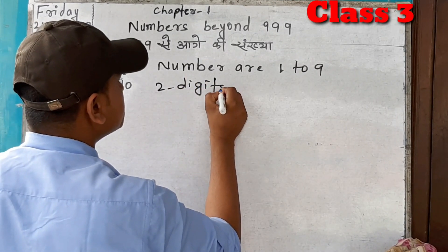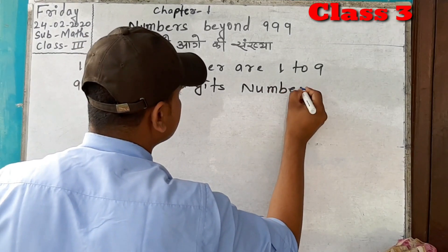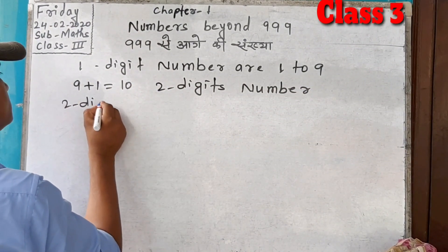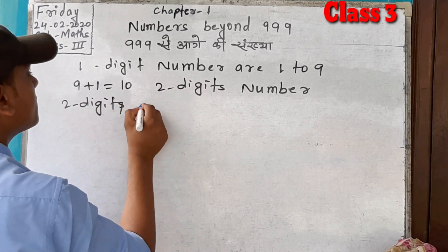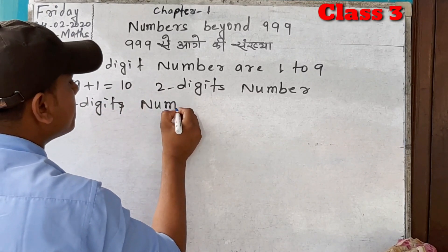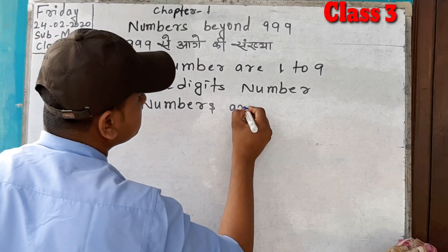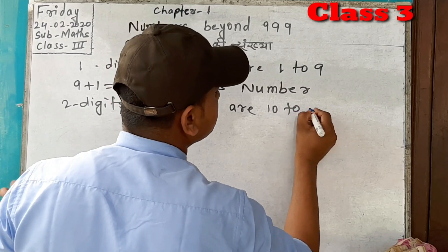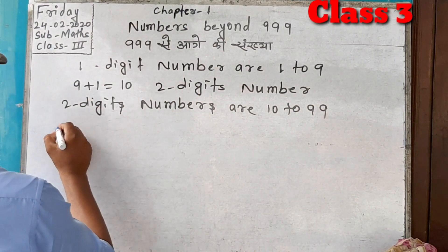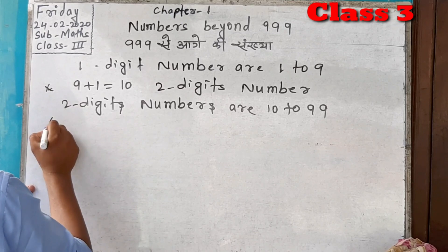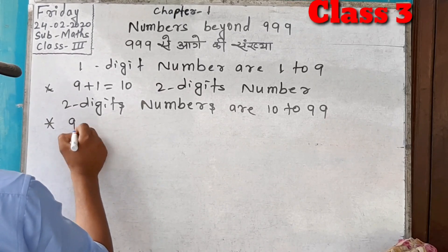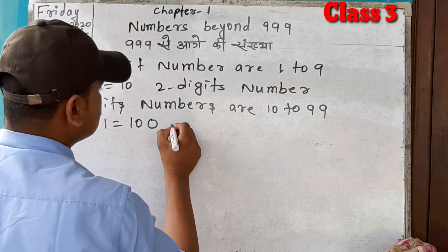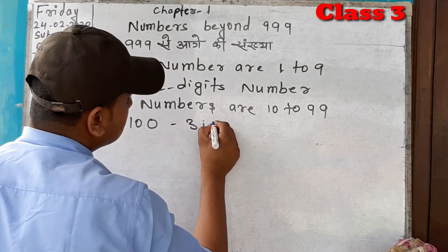Two-digit numbers are 10 to 99. If we add 99 plus 1, it is equal to 100, which is a three-digit number.